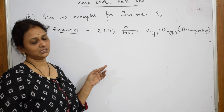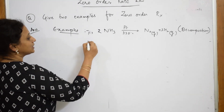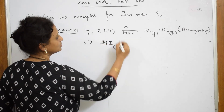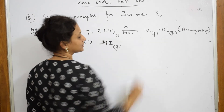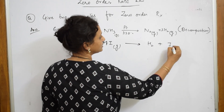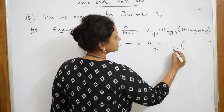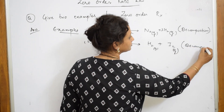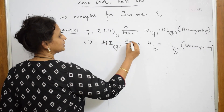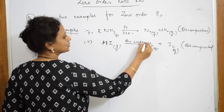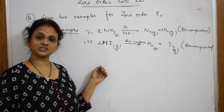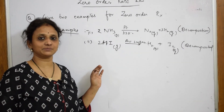The second example is the decomposition of hydrogen iodide: 2HI (gas) breaks up into H₂ and I₂ vapors — again a decomposition reaction. This occurs in the presence of a gold surface. You can pick up these two examples for zero order kinetics; these are the simplest basic examples.